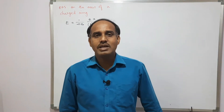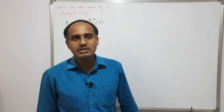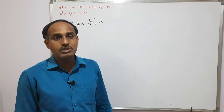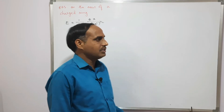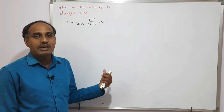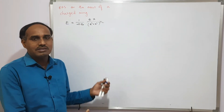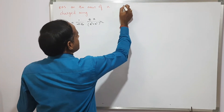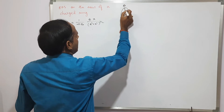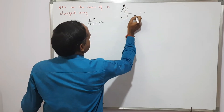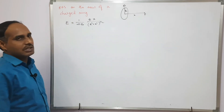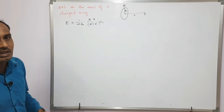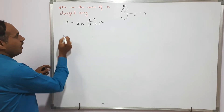Hello, dear students, welcome to our channel MST Physics, where physics gets charged. In the last video we discussed the expression for electric field strength due to a charged ring on its axis. Today we will discuss how that electric field strength varies on the axis of the charged ring. Suppose this is our ring with charge q and radius r, and along the axis at x we find E equals 1 over 4πε₀ times qx over (r² + x²)^(3/2).